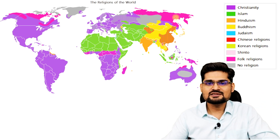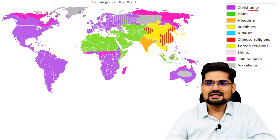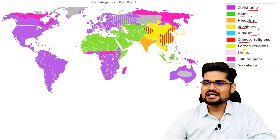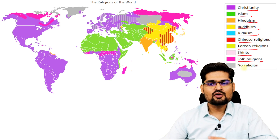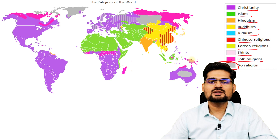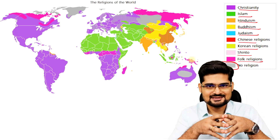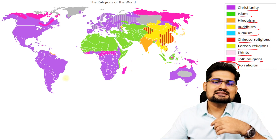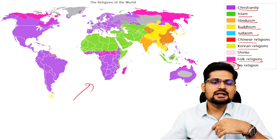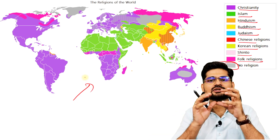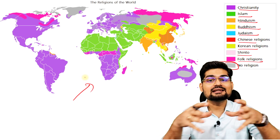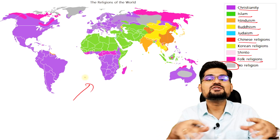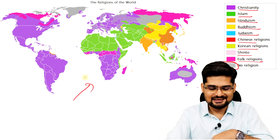Like language, religion also creates a colorful spatial pattern across the globe. On this world map you observe: Christianity, Islam, Hinduism, Buddhism, Judaism, Chinese religions, Korean religions, Shinto, folk religions, and certain places where there is no particular religion. This colorful picture tells us that religion is spatial in nature, regional in nature — and that is why it is geographical in nature.